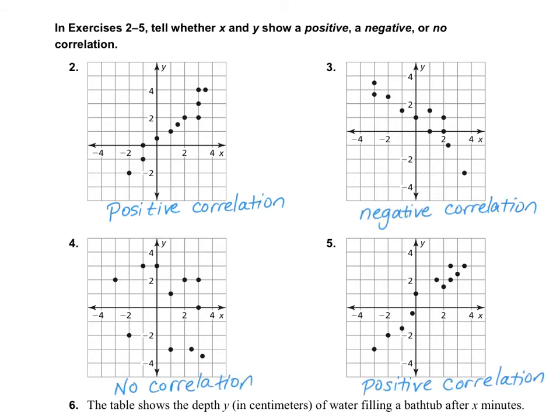For number 3, I got negative correlation because it's heading down. For number 4, I got no correlation because it looks like they're all over the place and I can't tell whether it's heading up or down. And for number 5, it looks like it's heading up, so I wrote positive correlation.